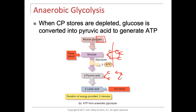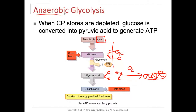Now, if oxygen is available, this pyruvic acid is going to enter the mitochondria, which is where we have the Krebs cycle and the electron transport chain. But you have to have oxygen available, O2. If oxygen is not available — anaerobic, you don't have oxygen — pyruvic acid is converted into another type of sugar called lactic acid.